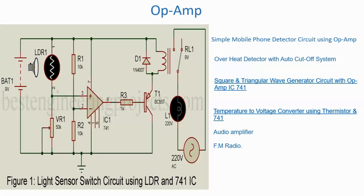Pin number 2, 3, and 6 of the 741 are the important pins. Pin 2 and 3 are the inverting and non-inverting inputs — that is minus and plus. You can see on the screen: one is inverting and one is non-inverting. Pin number 6 is the output, which is connected to the base of a PNP transistor. The 557 is a PNP transistor, and that transistor drives the relay.